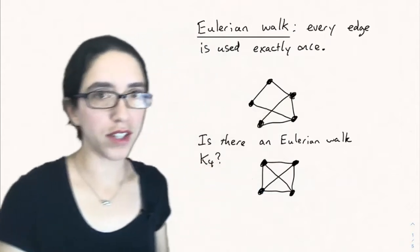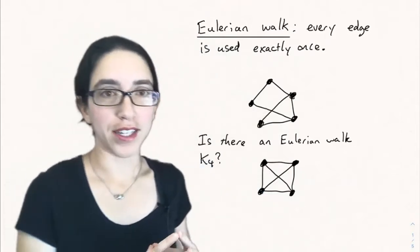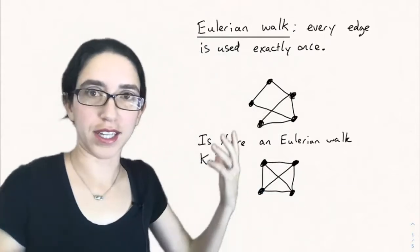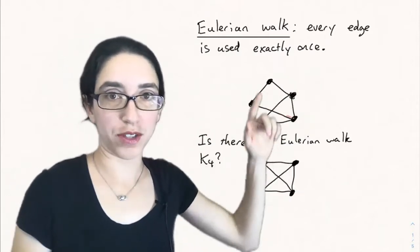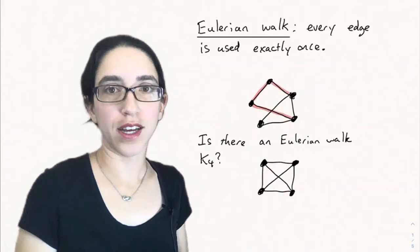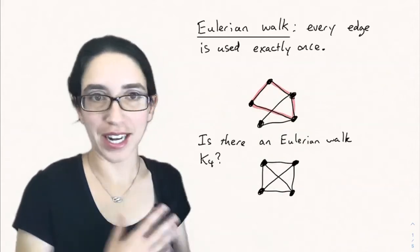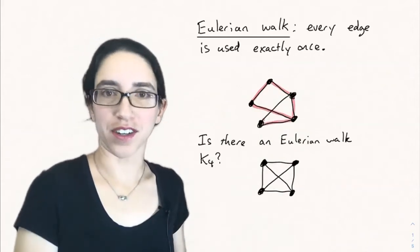But right now, let's talk about a special type of walk called an Eulerian walk. It's an efficient walk in the sense that every edge is used exactly once. So if you want to walk down every street in a certain grid of streets exactly once without repeating a street, can you do that on a given graph?